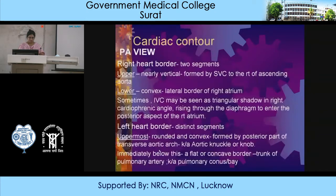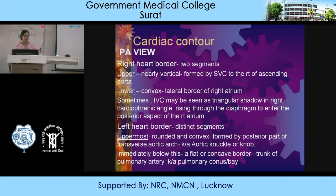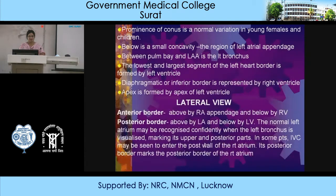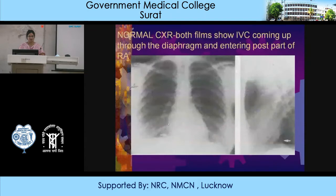Cardiac contour on the PA view: the right heart border has two segments. The upper is almost vertical, formed by the SVC to the right of the ascending aorta. The lower border is convex, formed by the lateral border of the right atrium. Sometimes the IVC may be seen as a triangle of shadow in the right cardiophrenic angle, rising through the diaphragm to enter the posterior aspect of the right atrium.